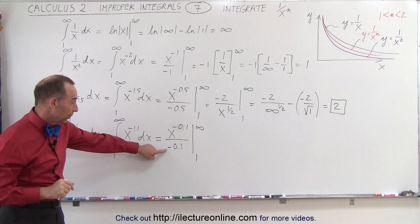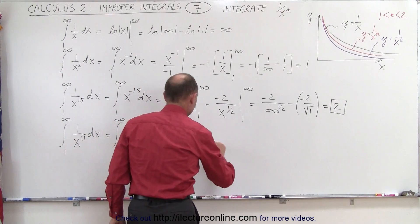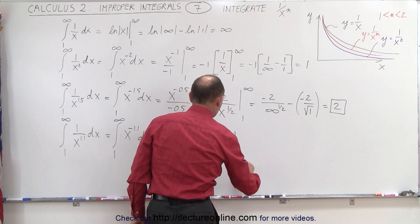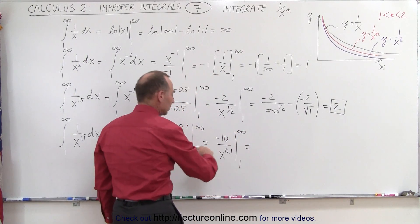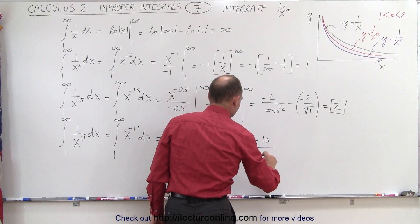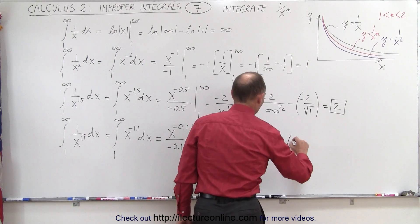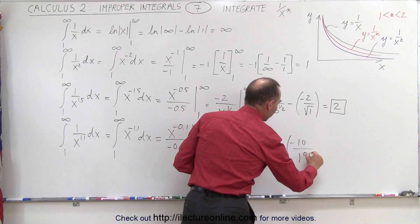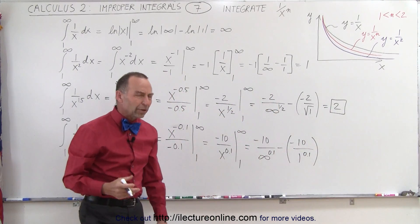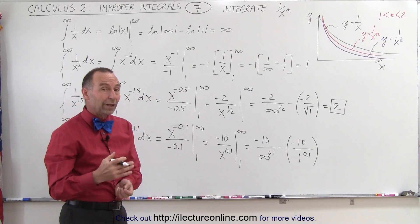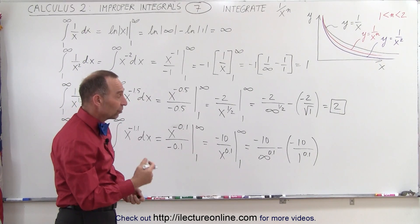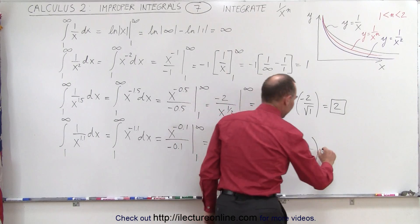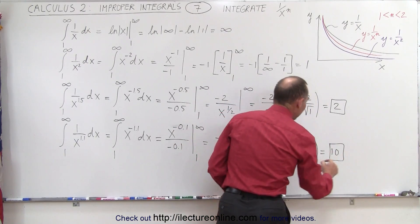Placing the denominator in the numerator, that becomes negative 10 divided by x to the 0.1 power, evaluated from 1 to infinity. Plugging in the upper limit gives minus 10 over infinity to the 0.1 power, minus a minus 10 over 1 to the 0.1 power. Since 1 raised to any positive exponent equals 1, we get 1 in the denominator. The negatives cancel, and we get 10.